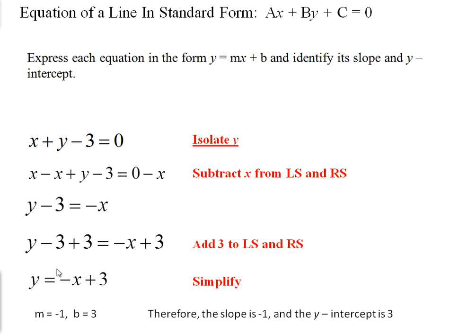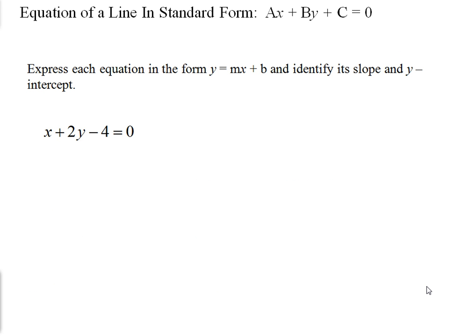So this would be much easier in terms of graphing. We can graph this very easily when we can determine that the y-intercept is 3 and the slope is negative 1. Whereas when we were looking at the standard form, this information isn't as clearly visible. So we'll try another example.